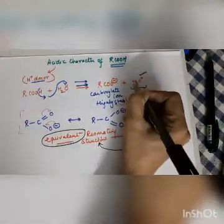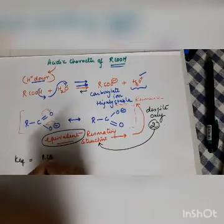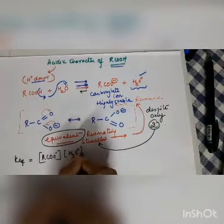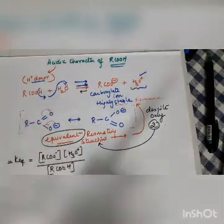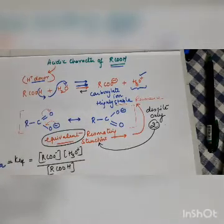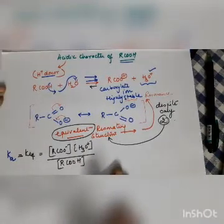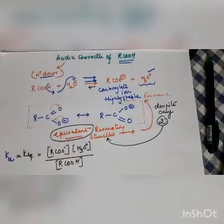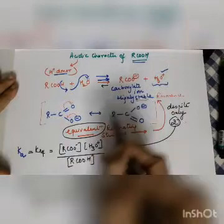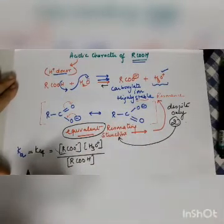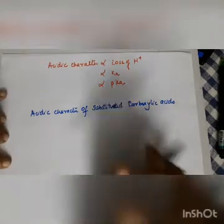Organic reactions are generally under equilibrium and do not go to completion. The equilibrium constant for this reaction is: Ka = [carboxylate ion][hydronium ion] / [undissociated carboxylic acid]. This Ka is the dissociation constant of the acid, as covered in unit 7, class 11 equilibrium chapter. A compound is highly acidic when the reaction goes in the forward direction, meaning Ka is high.